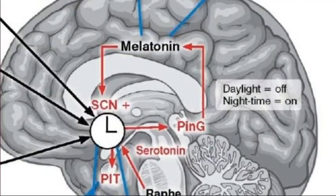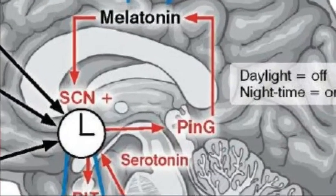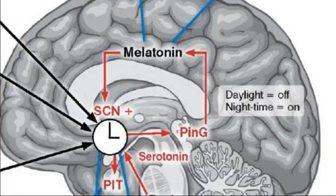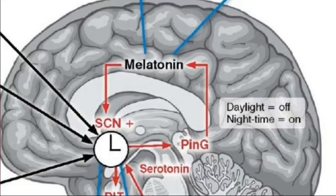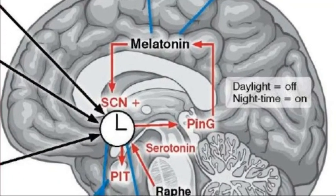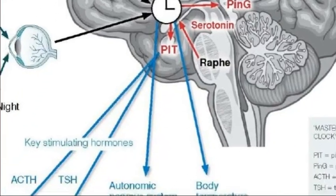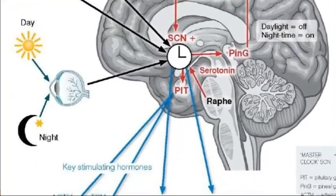Melatonin is secreted by the pineal gland, a very small gland right in the middle of the brain that looks like a pine cone — which is why it's called the pineal gland. It has been referred to as the third eye; the theory is that it was once actually an eye, but as humans evolved the brain enveloped it so it's no longer a visual receptor. It still retains the ability to translate light into action: when there's no light it secretes melatonin; in the daytime it is switched off.